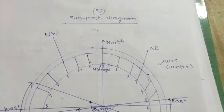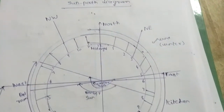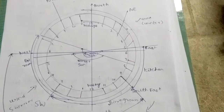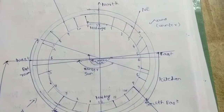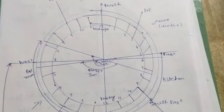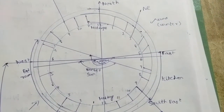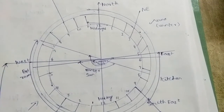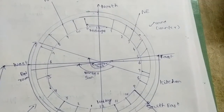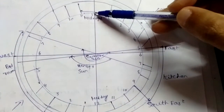Let us dive into the next topic: the sun path diagram. The sun path diagram is a diagram which indicates the different positions of the sun with respect to the earth, so we are able to analyze the different positions of the sun at different timings of the day. As you can see in the diagram, there is a circle.